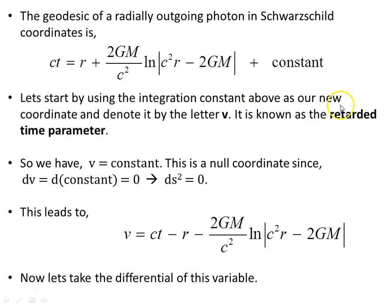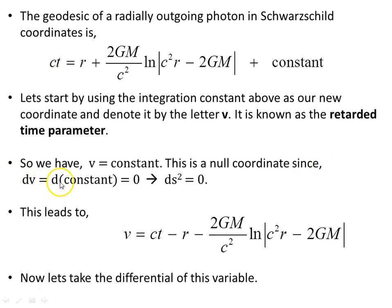Let's start by using the integration constant as our new coordinate, denoted by the letter V, known as the retarded time parameter. V equals constant is a null coordinate since dV — the differential of the constant — is 0. And if you keep r, theta, and phi constant, then dS squared will still be 0. Hence it is a null coordinate because the line element will be 0 for it.